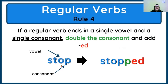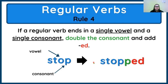Rule number four: if a word ends with a consonant, and the letter before it is a vowel, we write the last consonant once more and we add e, d. Again, if a word ends with a consonant and the letter before it is a vowel, we write the last consonant once more and add e, d. Very good.